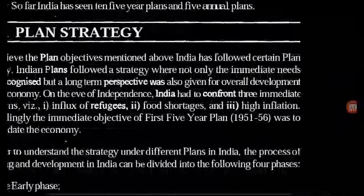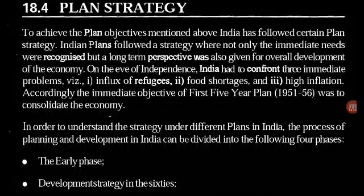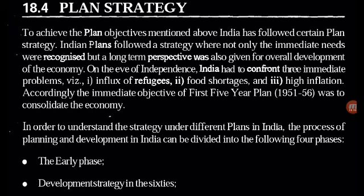To achieve the plan objectives mentioned above, India has followed a certain plan strategy. Indian plans followed a strategy where not only immediate needs were recognized but a long-term perspective was also given for overall development of the economy. On the eve of independence, India had to confront three immediate problems: influx of refugees, food shortages, and high inflation. Accordingly, the immediate objective of the first five-year plan was to consolidate the economy. The process of planning and development in India can be divided into four phases: the early phase, development strategy in the 60s, development strategy in the 70s and 80s, and new development strategy.